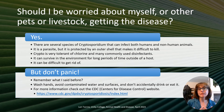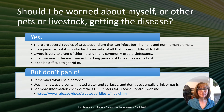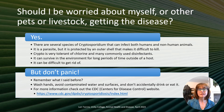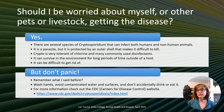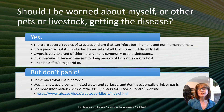Should you be worried about yourself, pets, or livestock getting the disease? Yes, to an extent — you should be aware, concerned, and careful, but there's no need to panic. There are several species of crypto that can infect both humans and non-human animals. It's a parasite with a strong outer shell that makes it super hard to kill, very tolerant of chlorine and many disinfectants, and it can survive for a really long time outside of the host in the environment. It's tough to get rid of, so we want to be diligent but not panic.